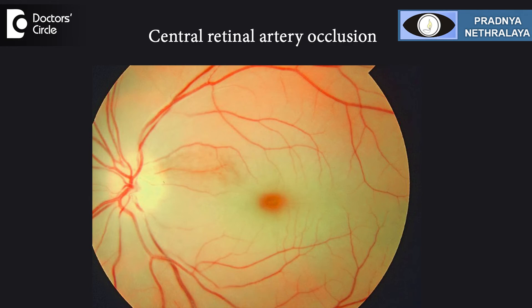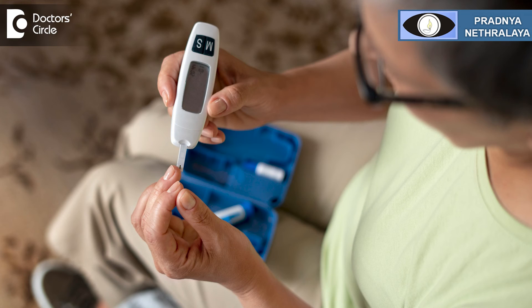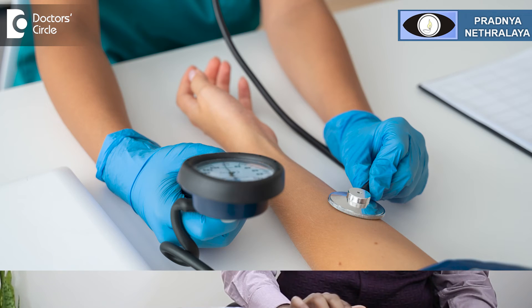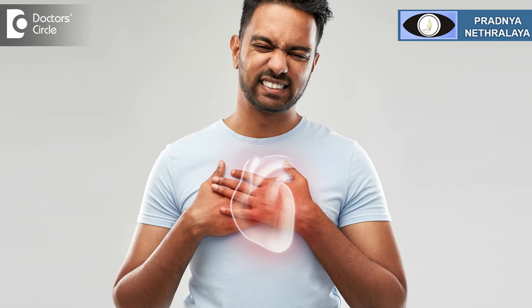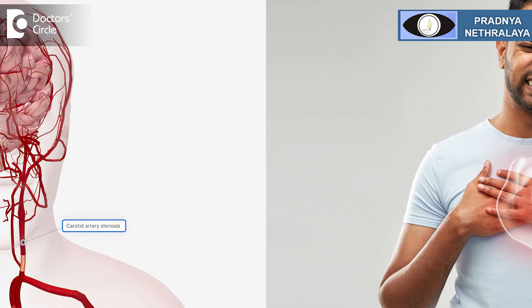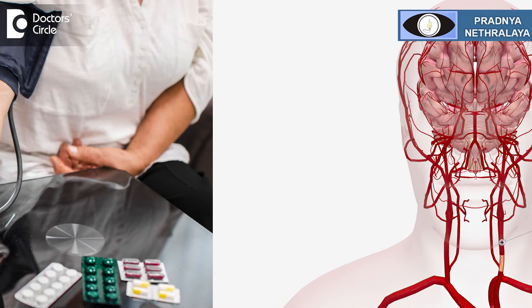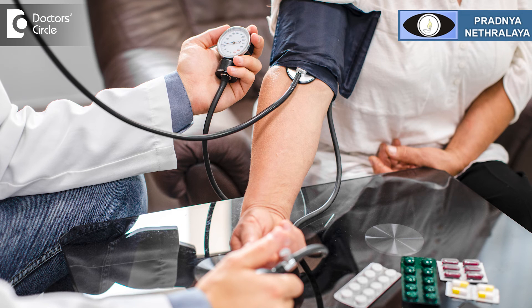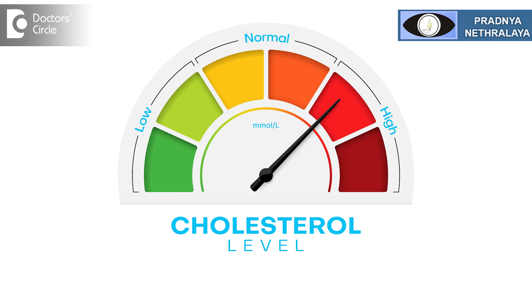Other conditions that can cause this include central retinal artery occlusion or branch retinal artery occlusion because of uncontrolled diabetes or hypertension. It can occur because of infections — specifically an infection in the retina called cytomegalovirus retinitis. It can occur in patients with cardiac disease, carotid artery disease, high blood pressure, high cholesterol levels, or hypercholesterolemia.